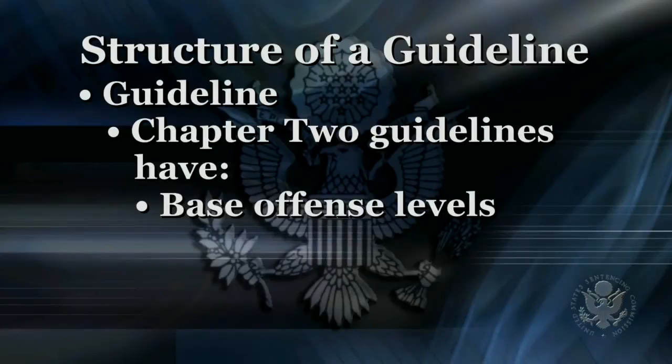Each guideline in the manual and each chapter contains specific sections. At the beginning of various chapters, as well as parts of chapters in the guidelines manual, you will also find introductory commentary that describes the purpose of the chapter or part and may describe the theory behind the application of that particular section. Each Chapter 2 guideline has a specific structure, and each part is extremely important in the calculation of the appropriate offense level for a defendant. Each Chapter 2 guideline has a base offense level, which is the starting foundation for guideline application and provides a specific number of offense levels attributed to a particular offense.